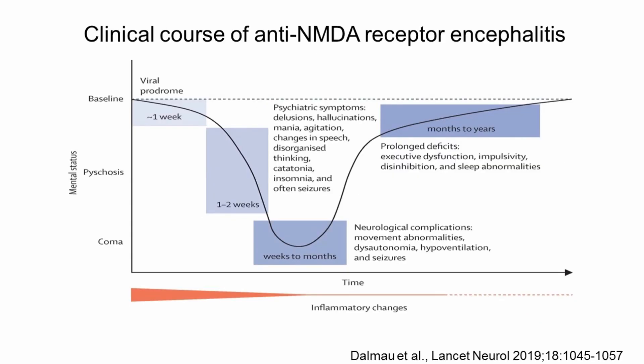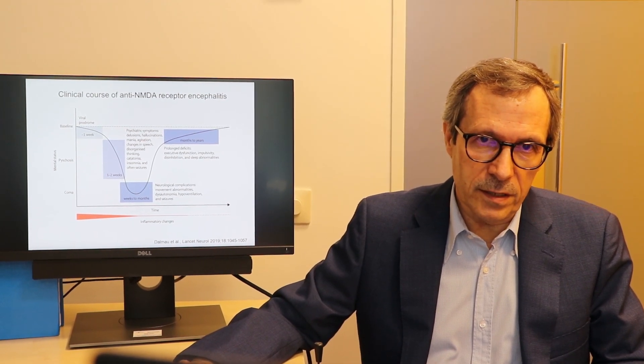As you know, this is a severe disease with an acute phase that usually requires intensive care support, and then there is a very prolonged phase of recovery that usually associates with executive dysfunction, memory problems, and some sleep dysfunction. Patients are treated with immune therapy or tumor removal when it applies, but it would be of great interest to find an additional treatment to accelerate recovery, particularly if the drug can be given systemically and cross the blood-brain barrier.